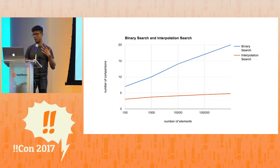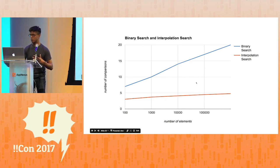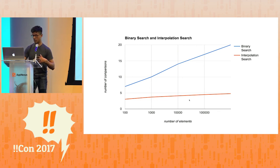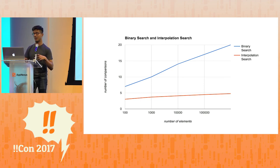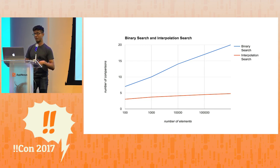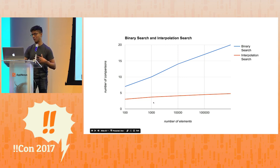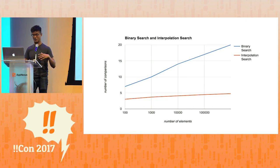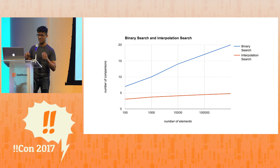Now it's graph time, because you want to see some proof and know that I'm not full of it. The blue line on top is binary search; the bottom line is interpolation search. The Y axis is the number of comparisons, and the X axis is the number of elements in your array. In this graph, less is better. You'll see that while binary search goes up and to the right, interpolation search stays kind of straight and flat — which is a good thing. This tracks the difference between O(log log n) and O(log n), and it's exactly what we expect.